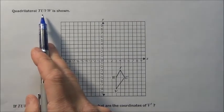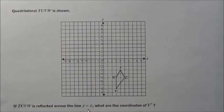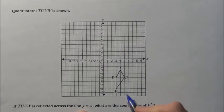It says quadrilateral TUVW is shown. So here it is. If TUVW is reflected across the line Y equals X, what are the coordinates of V prime?